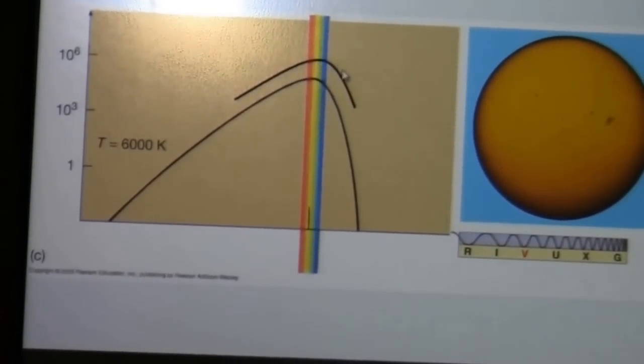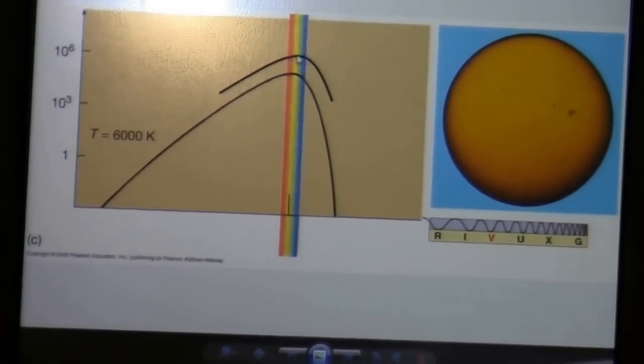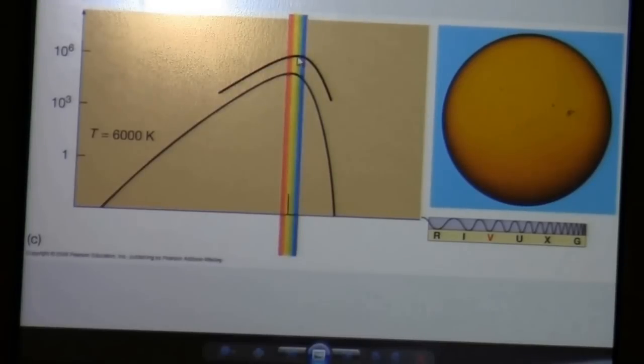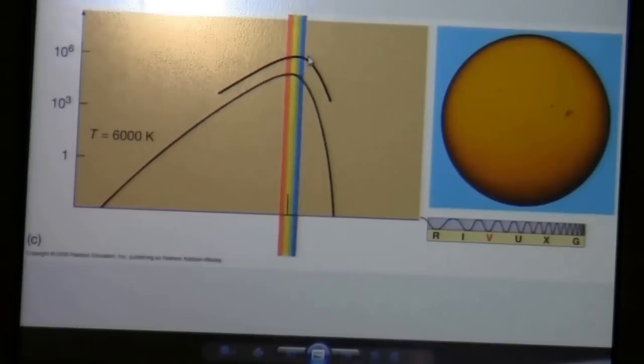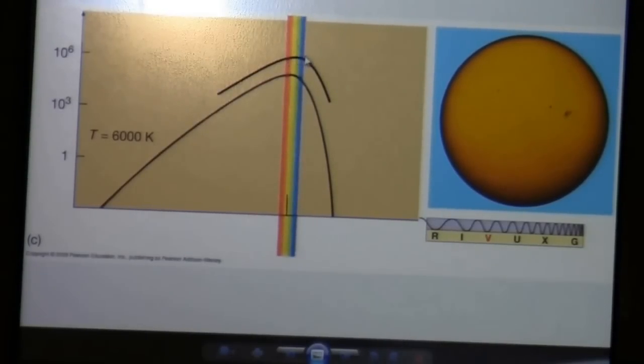But you can imagine another spectrum, maybe this one right here, where it's just a little bit hotter, and because of Wien's Law, the peak will shift over. If it peaks in the green, then you've got the flat part of the thermal spectrum right there going through the visible.